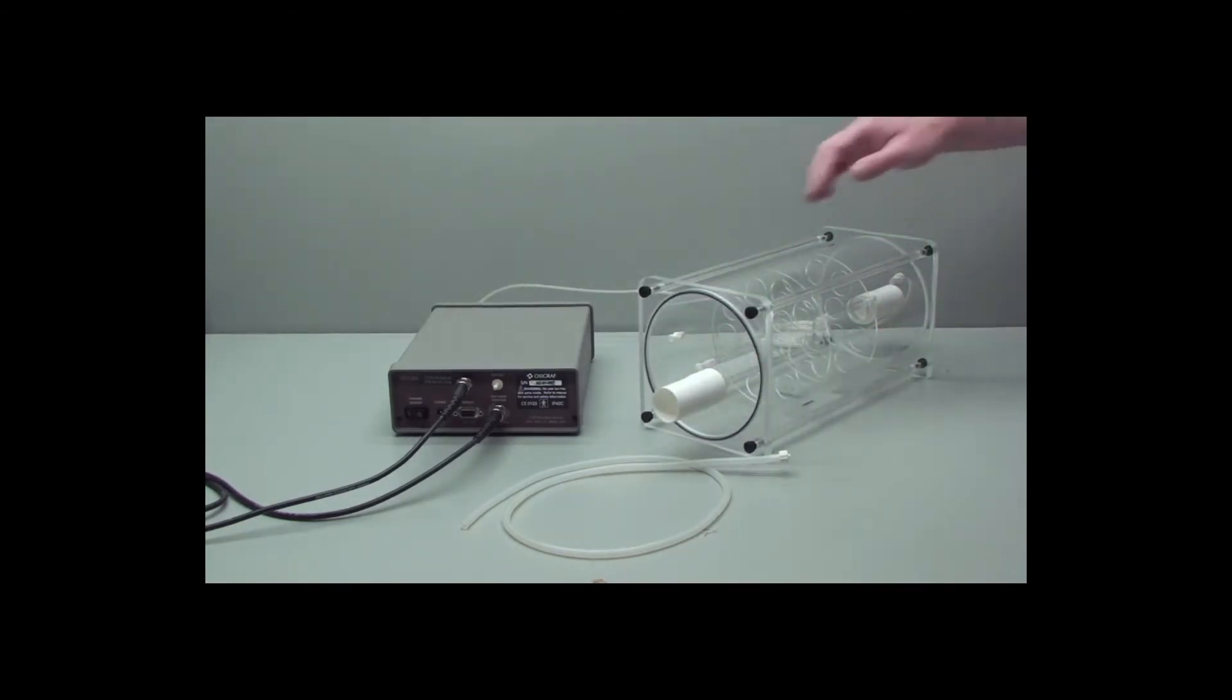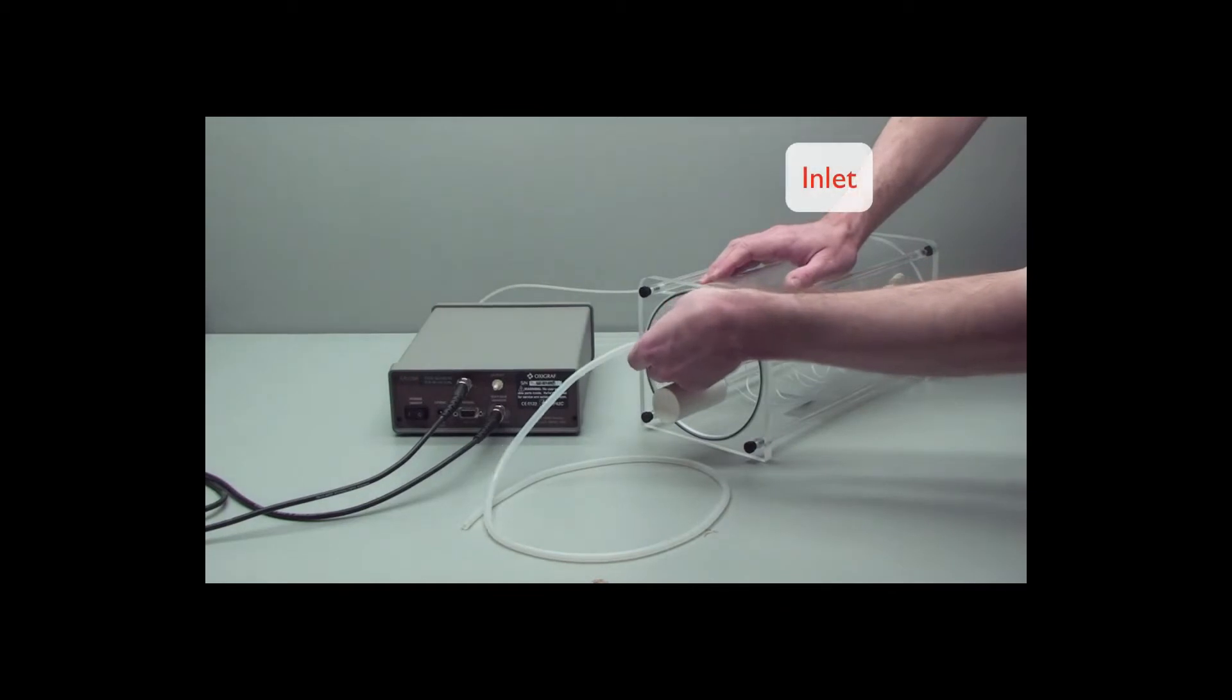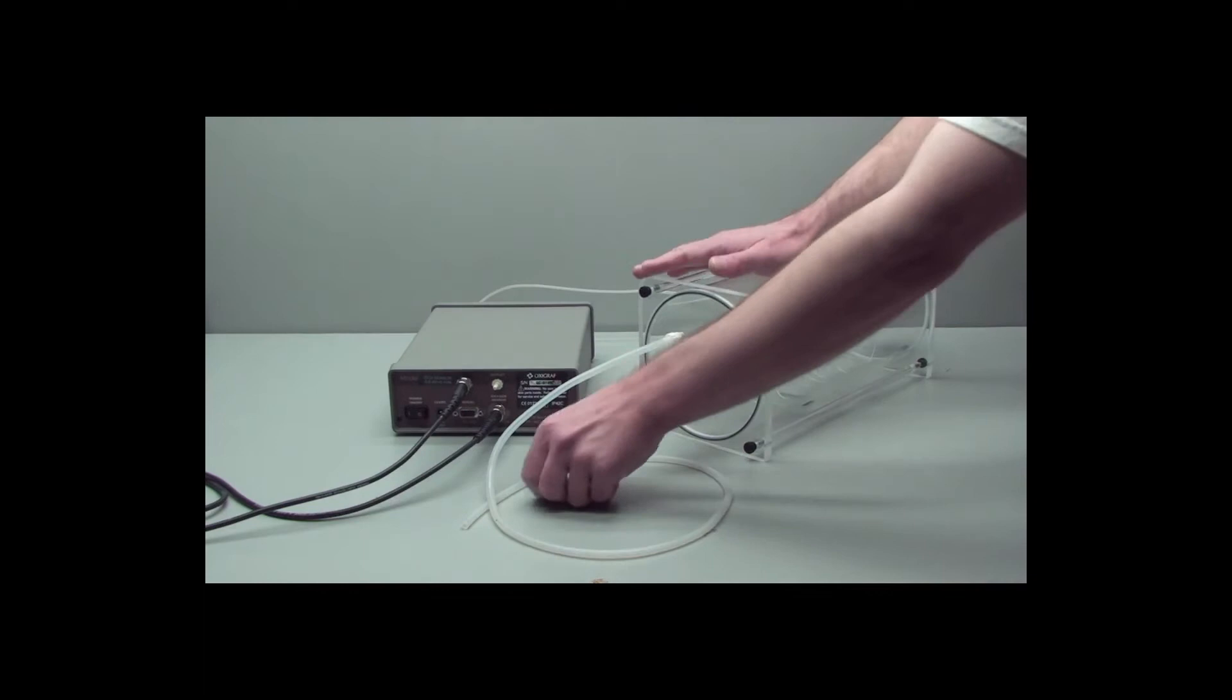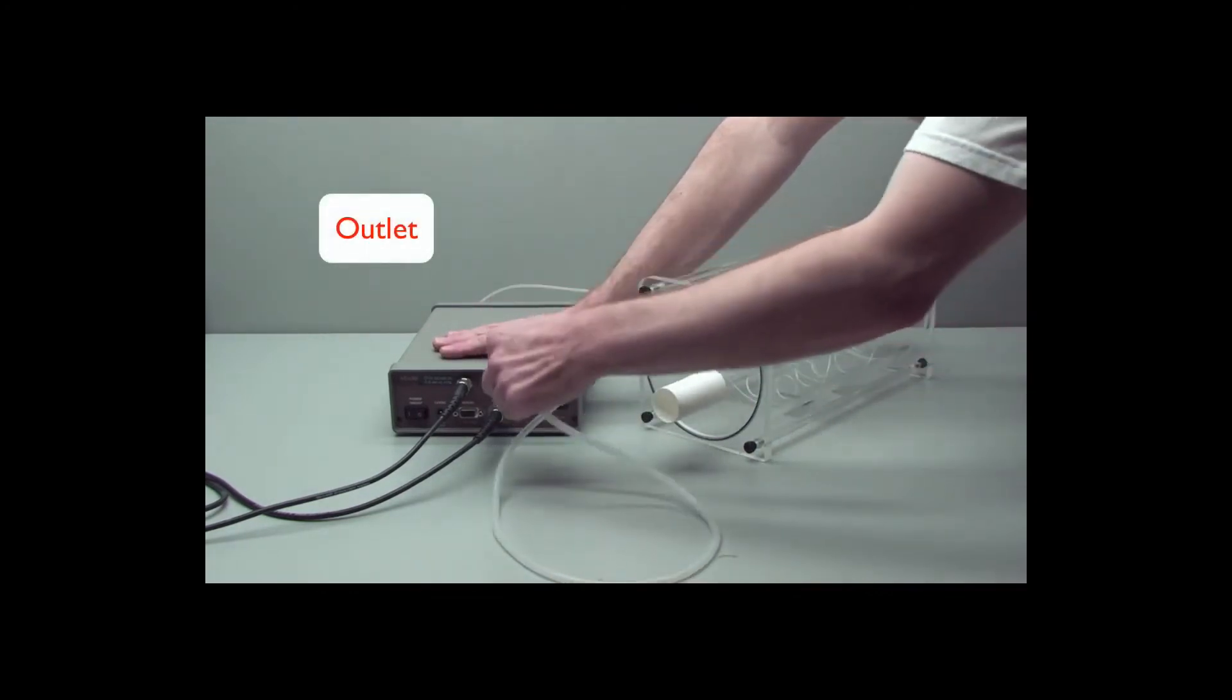Take the other tubing, and that goes to the inlet of the mixing chamber. And the other end goes to the outlet of the gas analyzer.